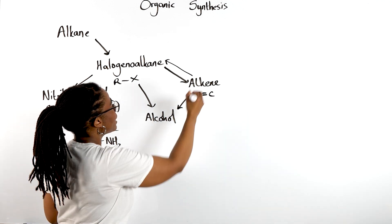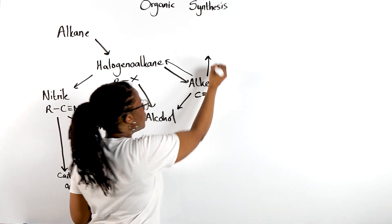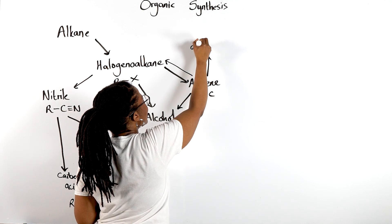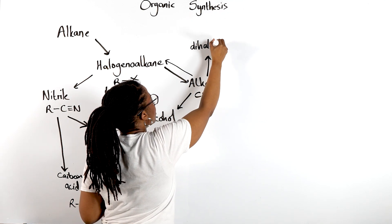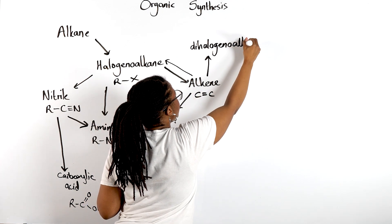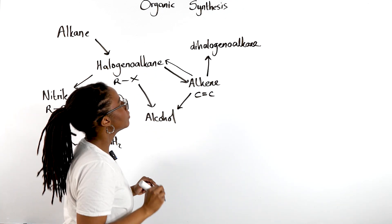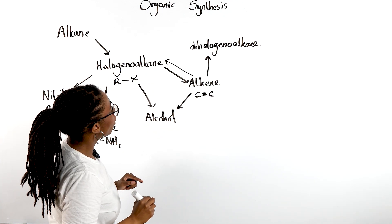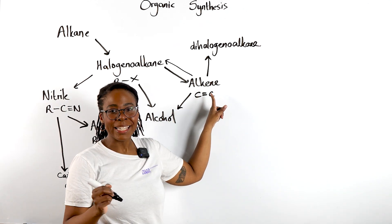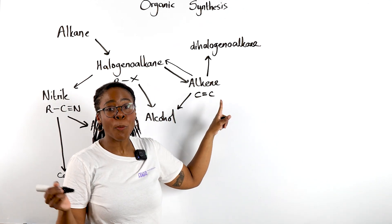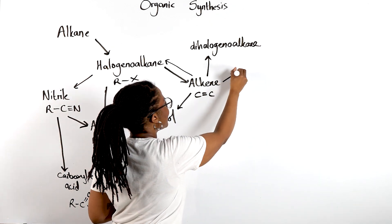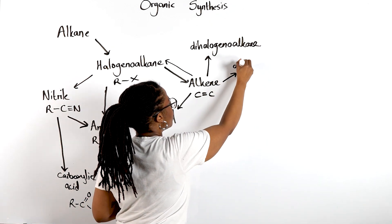Or if we were to add an actual halogen, say Br2, we could turn it into a dihalogenoalkane. And remember, alkenes can also form polymers because of this carbon-carbon double bond, so we can also form addition polymers.